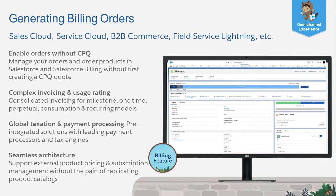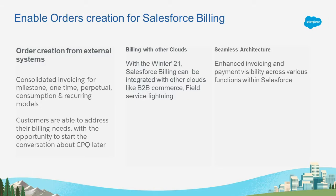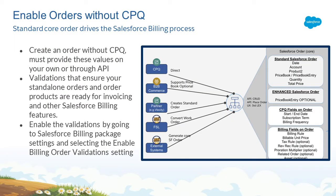For this initiative, we are launching a number of features for Salesforce Billing customers. Let's look at the first functionality that supports standalone orders without CPQ. New with Winter 21 release, Salesforce Billing is multi-cloud and standalone so you can manage all your customer interactions on the world's number one CRM. With this release, you get all the billing functionality which is decoupled from CPQ, and our customers are able to address billing needs with an opportunity to start conversations about CPQ later. You have a seamless architecture that works with other clouds where orders can be created with what billing needs to complete the underlying processes.